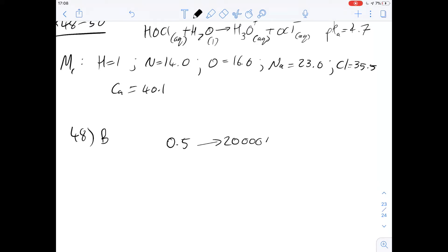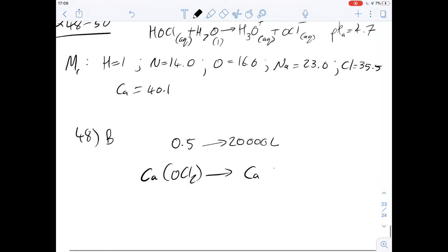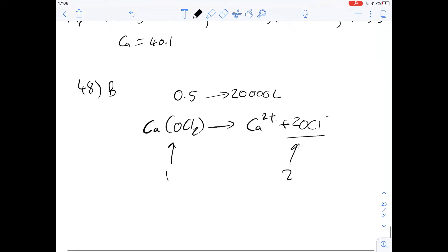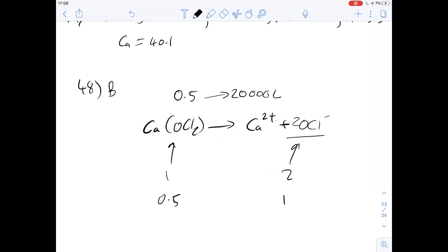The second thing I want to say is that we need to remember that calcium hypochlorite has this equation. When it dissolves, you get your calcium ion plus two of these ions, which means for every one mole you have of this, you end up with two moles of this. We're actually starting off with 0.5 moles of this, so we end up with one whole mole of this, meaning that we've got one mole of those ions dissolved into 20,000 litres of water.